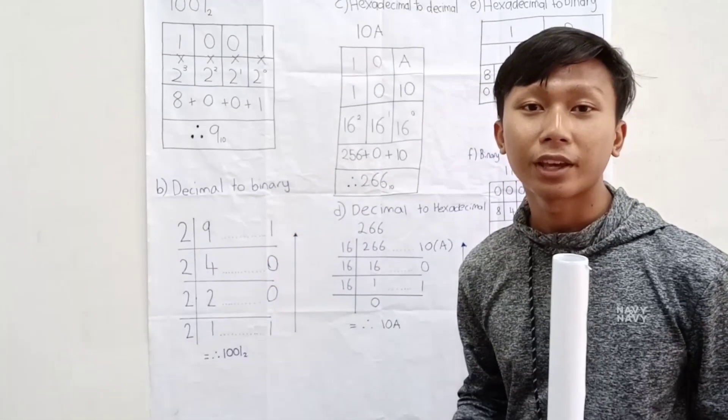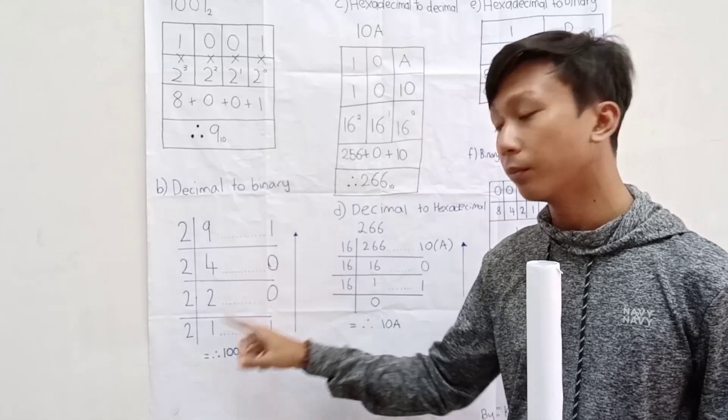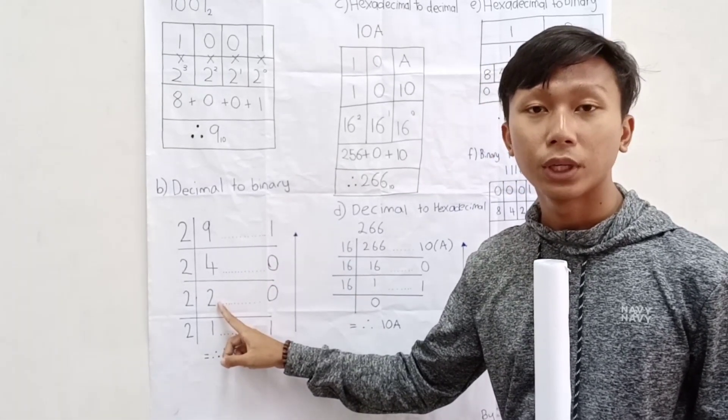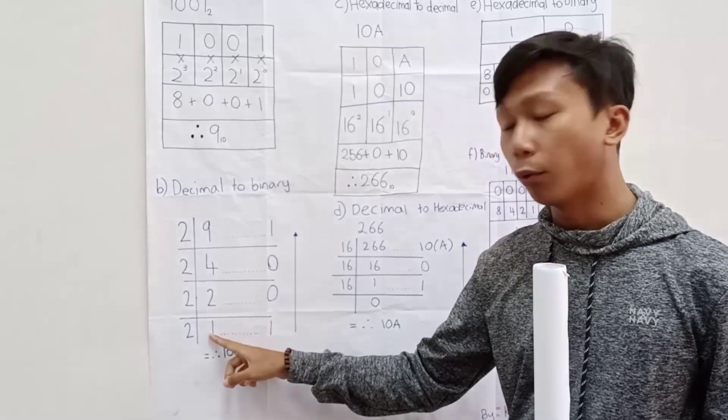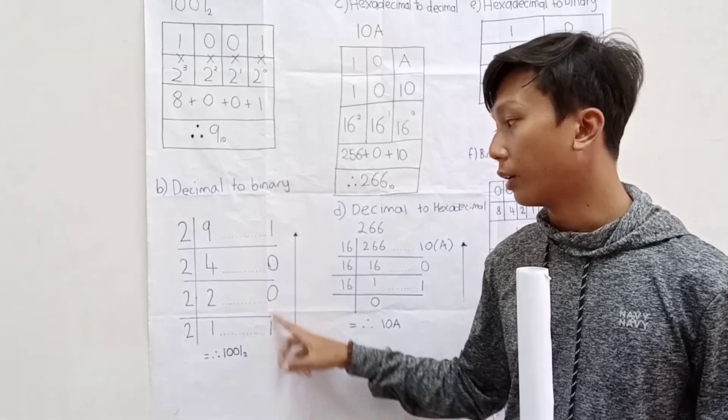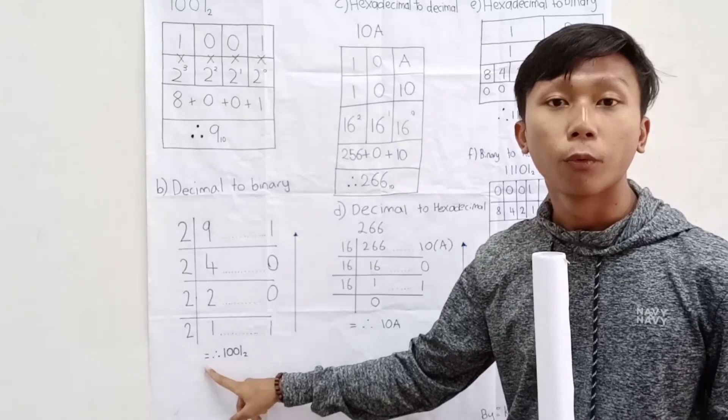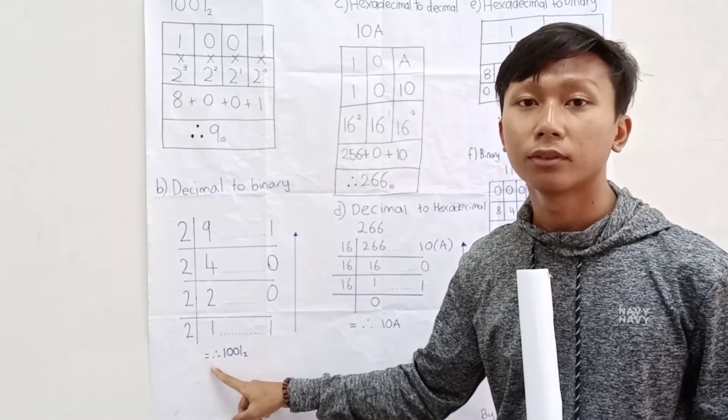The process will be carried on, which is 4 divided by 2. There is no remainder, so it will be 0. 2 divided by 2, it will be 0 also. And 1 divided by 2 will get 0.5, which is also 1. And we just rearrange it from the bottom to the top. We'll get 1001, base 2.